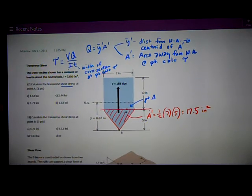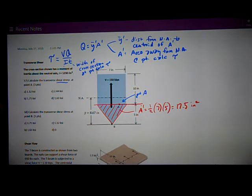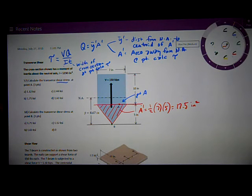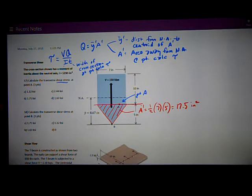Y bar prime is the distance from the neutral axis to that point. So I'm given that the neutral axis is right here, 8.67 inches from the tip.